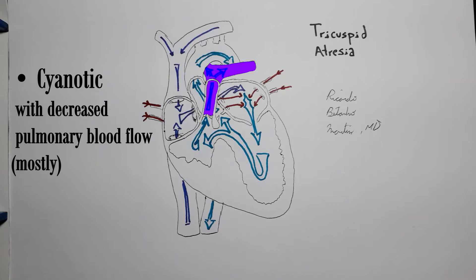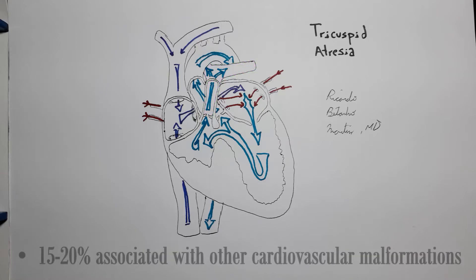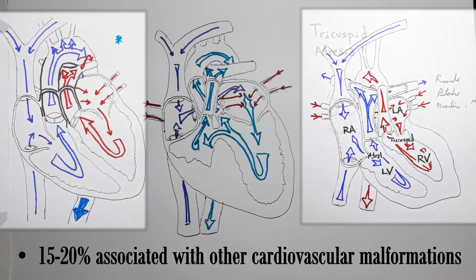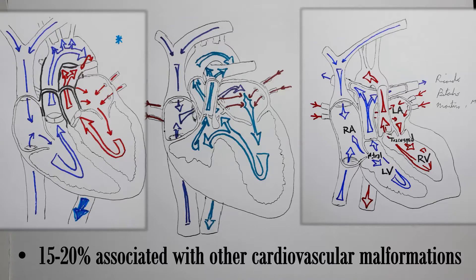However, tricuspid atresia can also present with increased blood flow in the absence of pulmonary stenosis. Decreased pulmonary blood flow is worse and more likely if there is some degree of pulmonary stenosis associated with tricuspid atresia. This is not uncommon since fifteen to twenty percent of tricuspid atresia cases are associated with other cardiovascular abnormalities. The most frequent of which is another condition we've also discussed, transposition of the great vessels. In fact, one of the main classifications for tricuspid atresia is based on the presence of transposition of the great vessels.